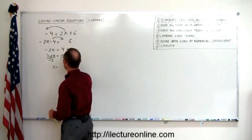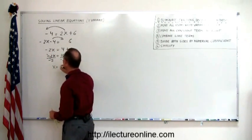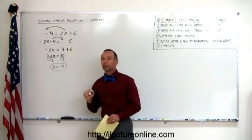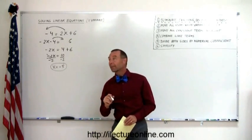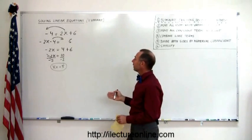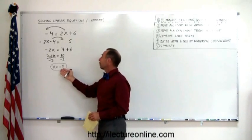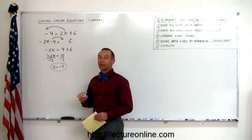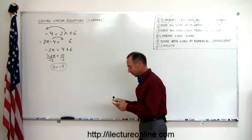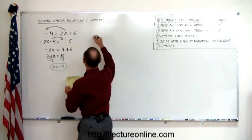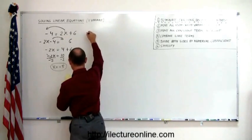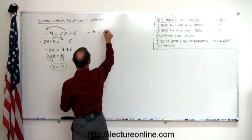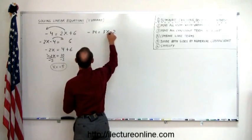We have x equals 10 divided by minus 2, which is minus 5. That's the answer — the solution — for our equation. It means if we replace x by minus 5, the left side will equal the right side. Now let's do another one: minus 14 equals 3x minus 2.